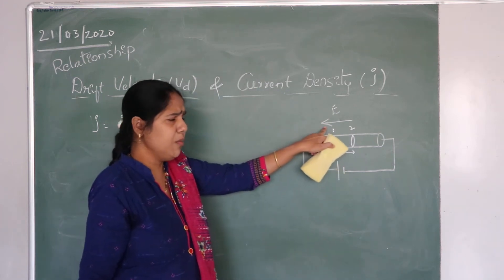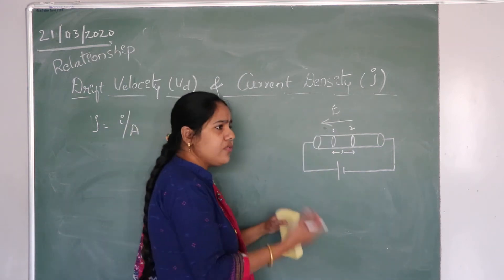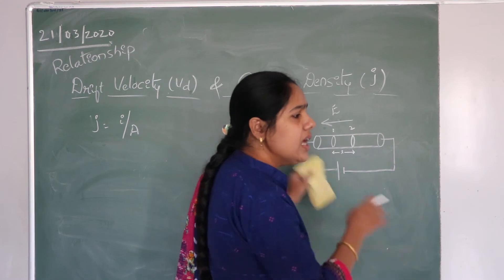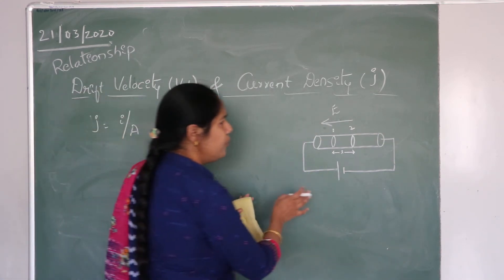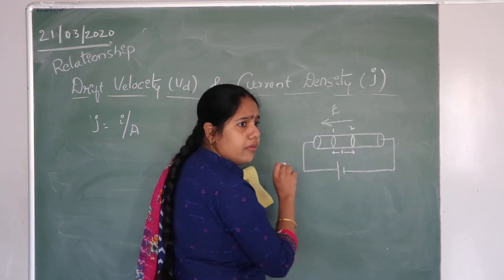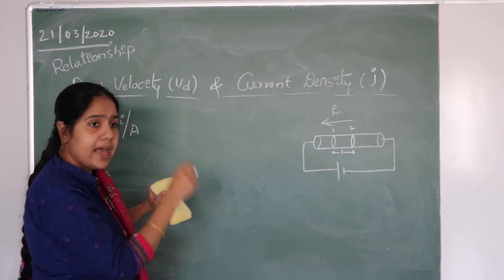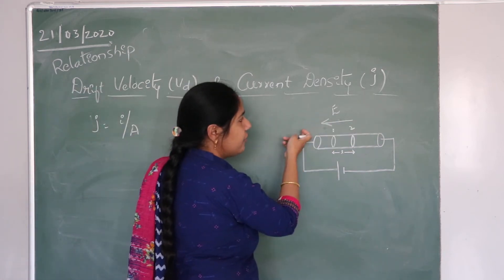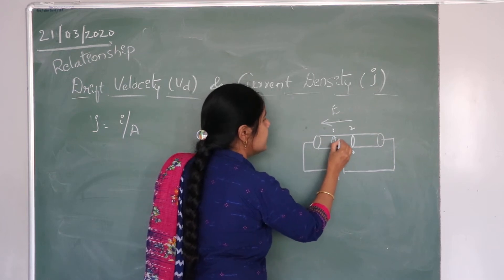As it is a conductor, the moment I apply the electric field, the electrons will obtain some velocity and start moving. They will start moving in the direction opposite to the direction of the electric field. So if the electric field is applied in this direction, the electrons will move in the opposite direction.